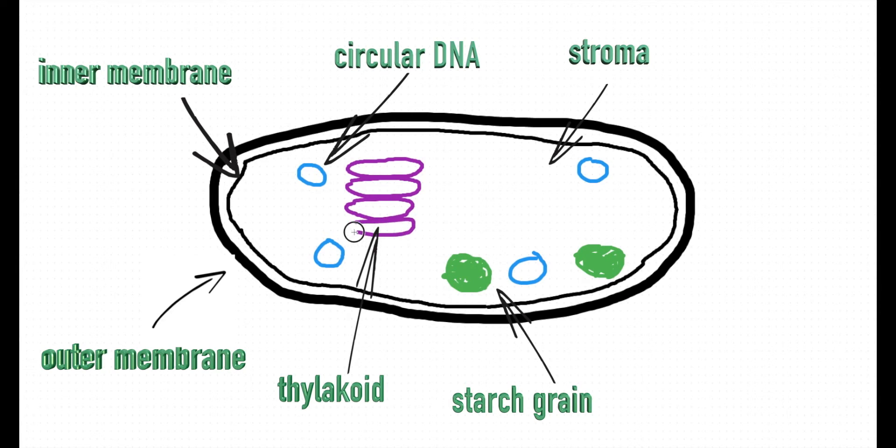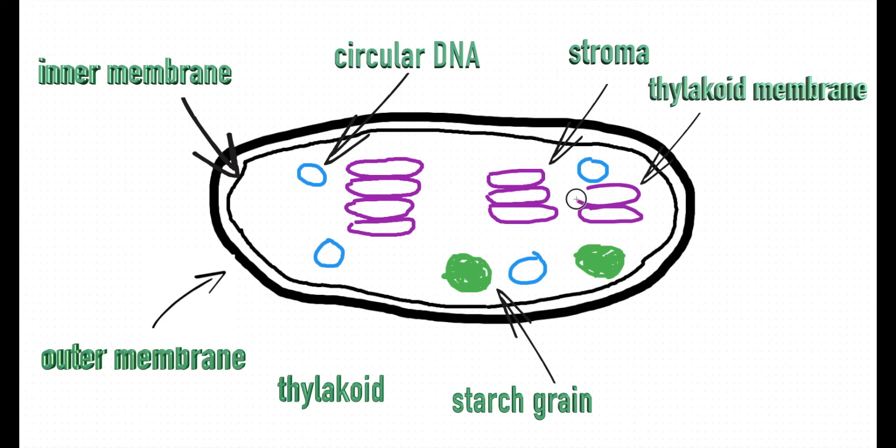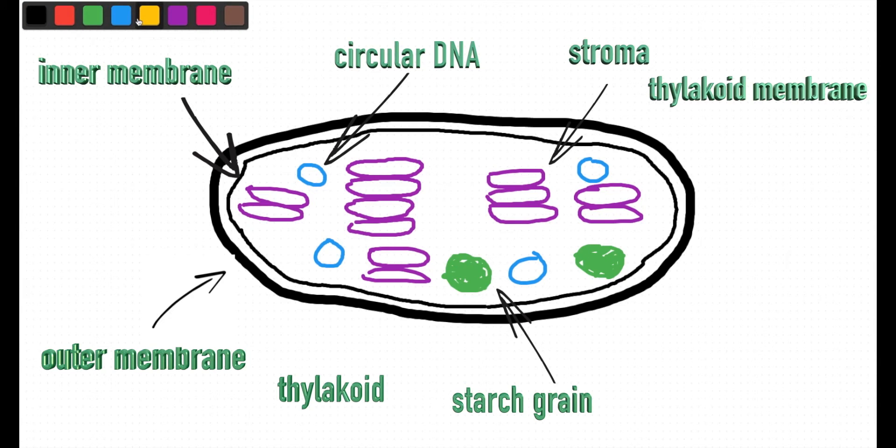It is here where pigments such as chlorophyll are found. The pigments are responsible for the absorbance of sunlight. So the thylakoids are also the site of photosynthesis. We shall study this in greater detail in a following video.